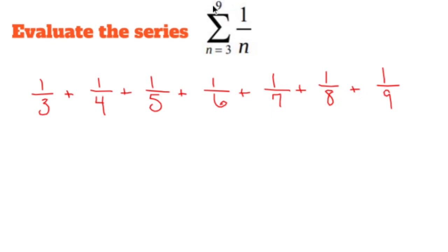Stop. Let me figure out what this is in my head. 3,349 over 2,520. Yeah, that's what it becomes.